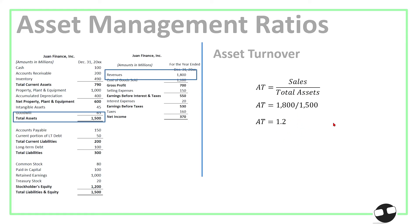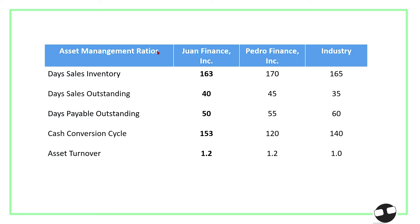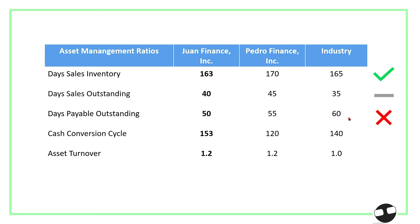Now for the comparative analysis: we want DSI and DSO to be as low as possible. Our DSI is 163 versus 170 for the alternative company and 165 for the industry — a favorable result. For DSO, we have 40 versus 45 for the alternative and 35 for the industry, giving us a neutral standing. For DPO, we want a longer figure since that means we can still use the cash for short-term investments. However, our 50 days is unfavorable compared to the alternative at 55 days and the industry at 60 days.